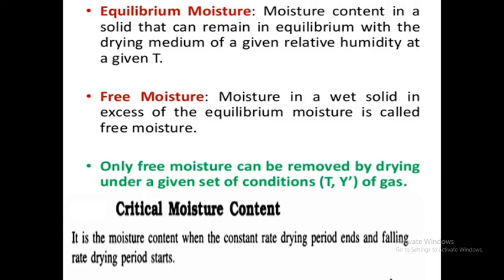What are the conditions? Temperature and humidity. Critical moisture content. It is the moisture content when the constant rate drying period ends and the falling rate drying period starts.